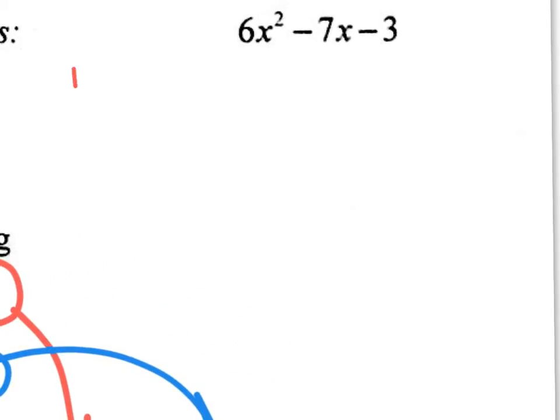Step 1, everybody, write down a 1, nice and tiny right there. Step 1 is A times C, which would be 6 times negative 3. And what is 6 times negative 3? Negative 18. That is my answer for step 1. Done.